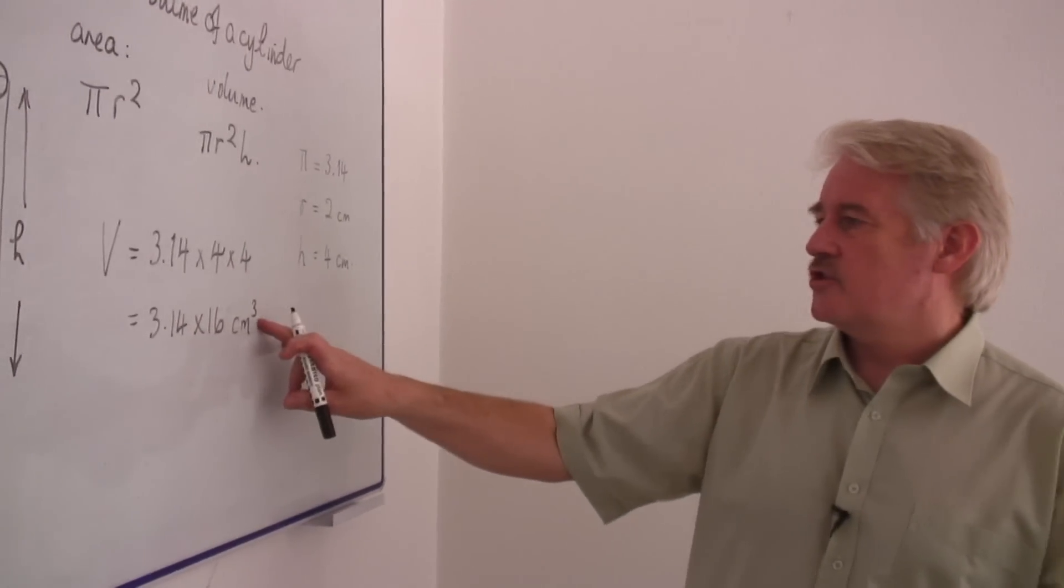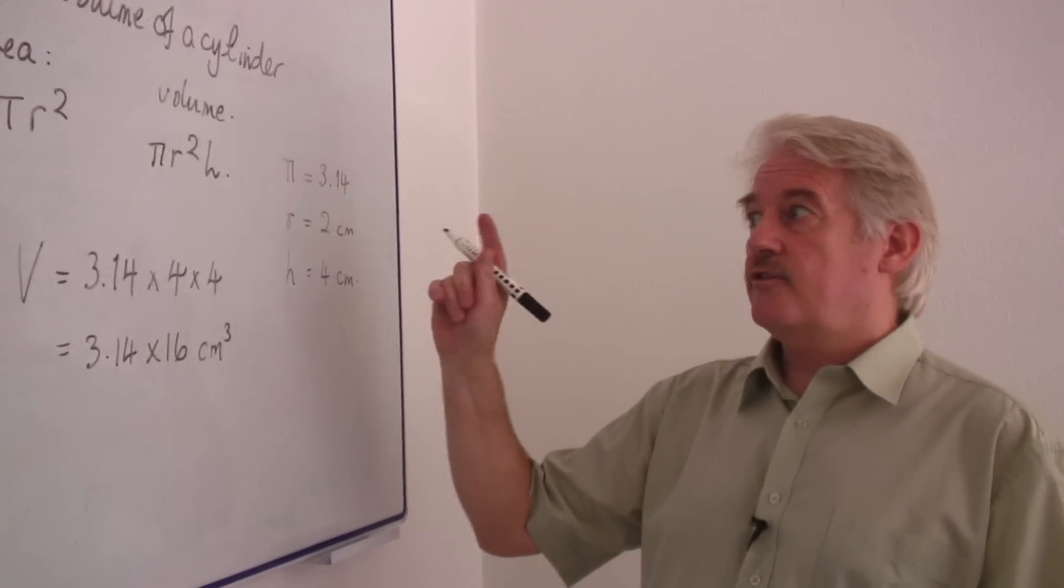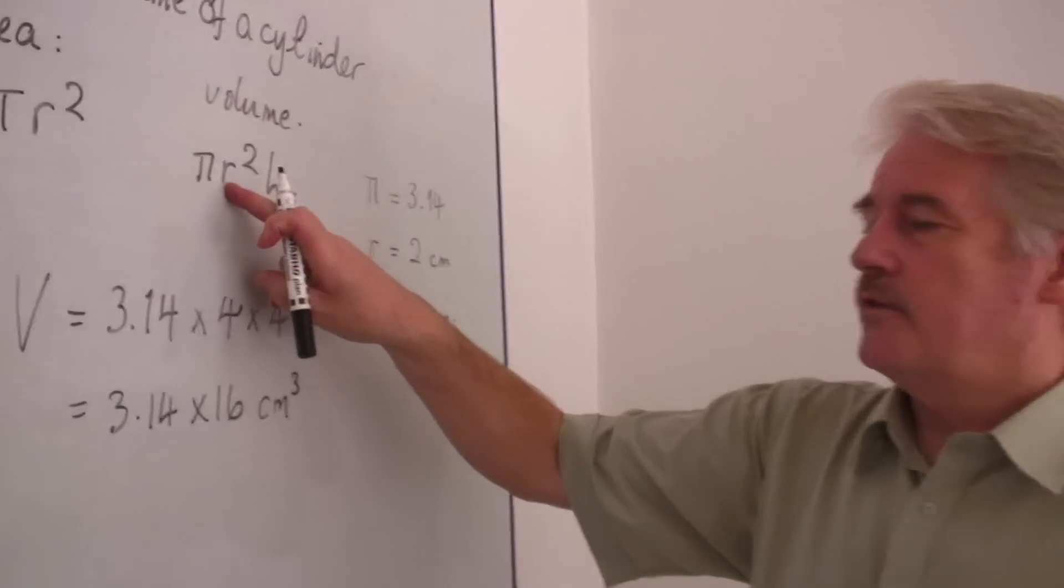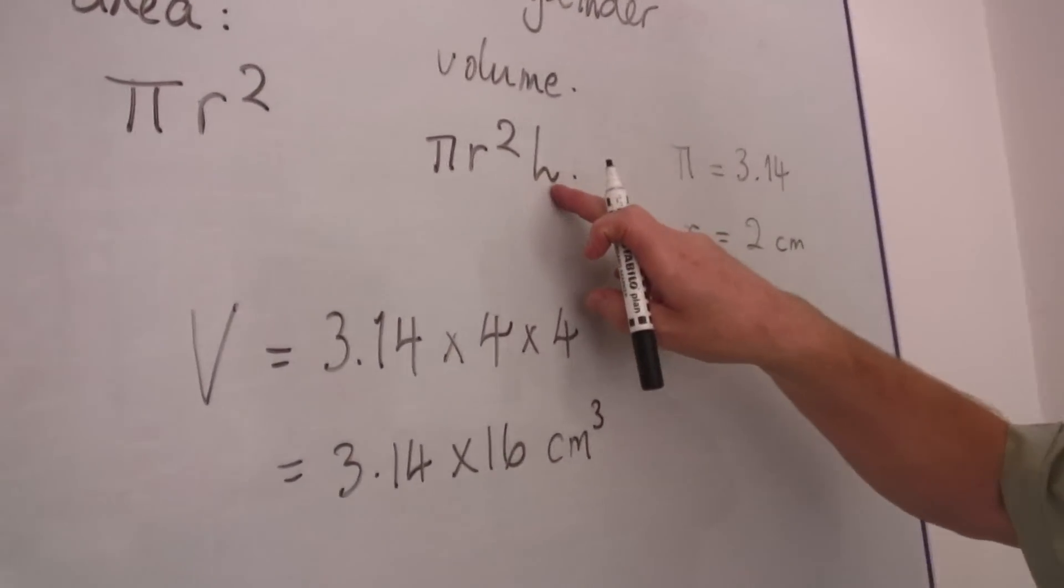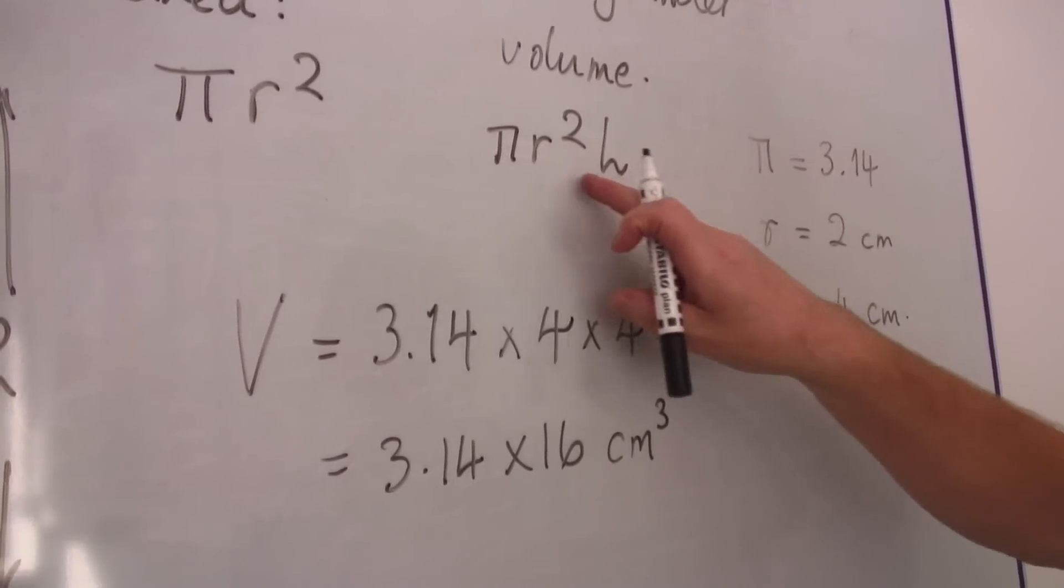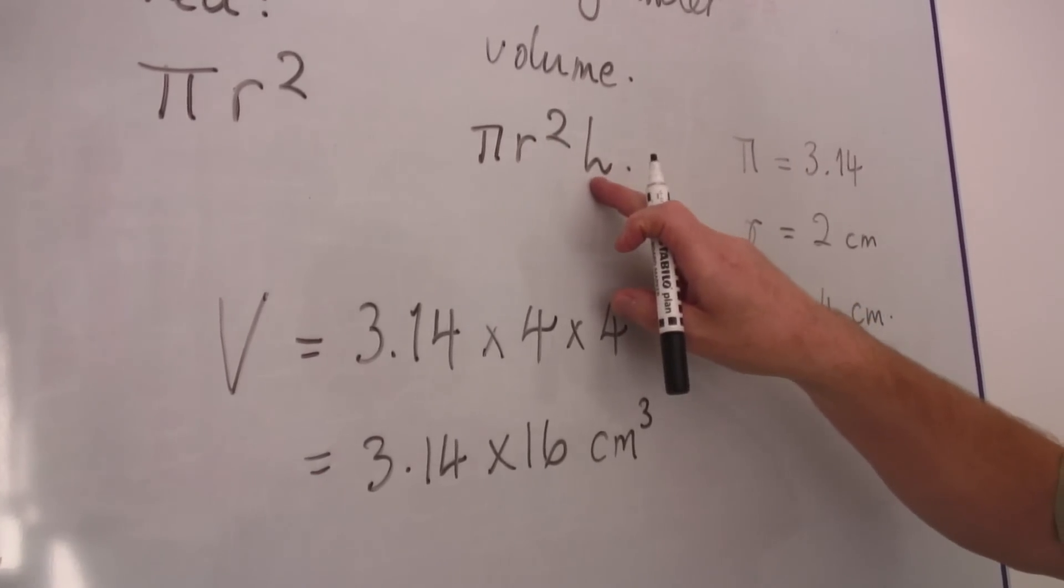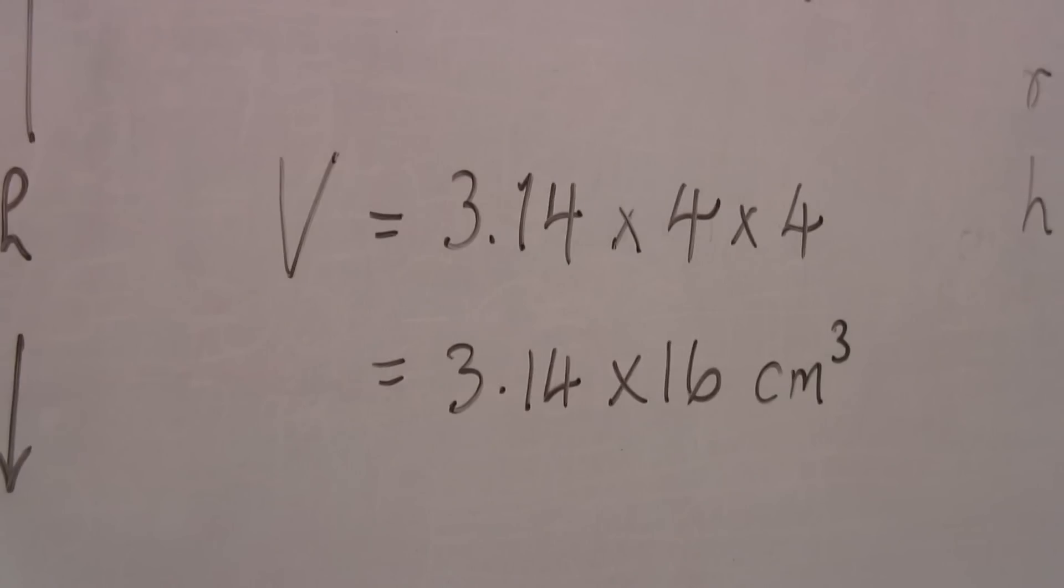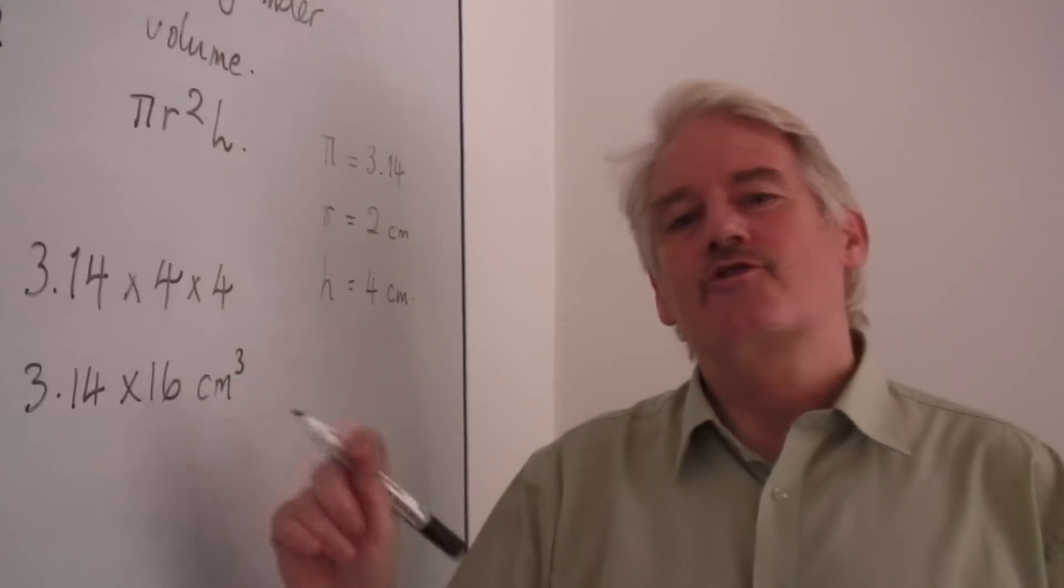The reason it's centimetres cubed is because we've got three lengths, the radius twice and the height. So centimetres times centimetres times centimetres. Work that out and see if you get the same answer as I do.